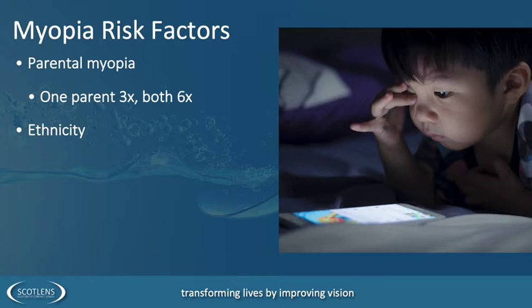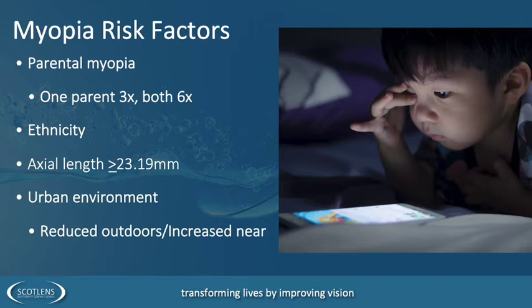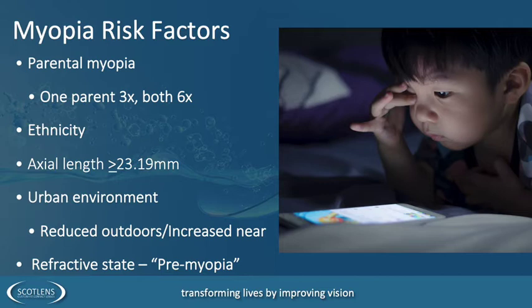Ethnicity is a factor, with eastern and southeast Asian ethnic groups having the highest prevalence of myopia. We're now measuring axial length — an axial length of 23.19 mm or more indicates the eye is likely to become myopic. Living in an urban environment is also a risk factor; rural environments have lower prevalence and later onset of myopia, due to reduced outdoor time and probably increased near work. Early refractive state allows us to effectively detect who's going to become myopic.